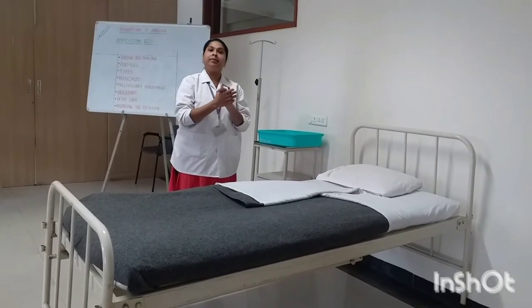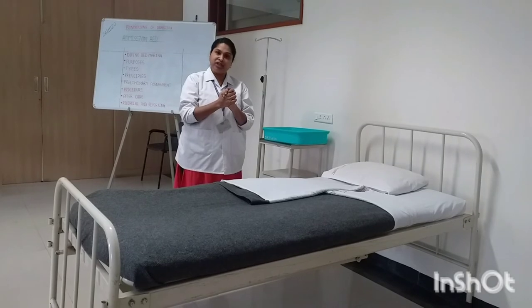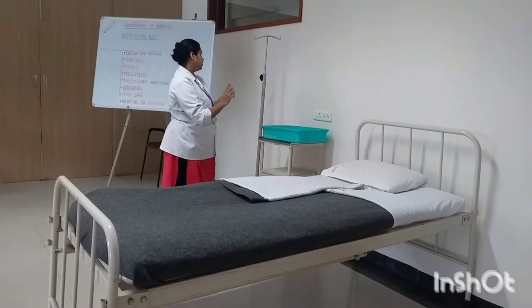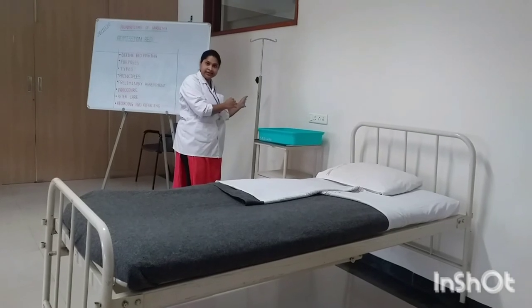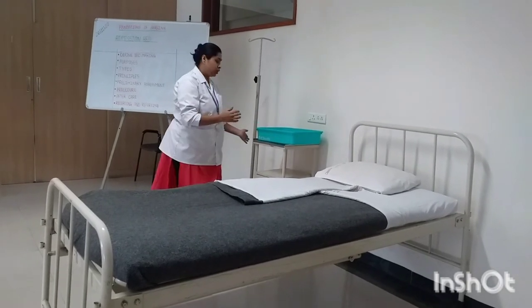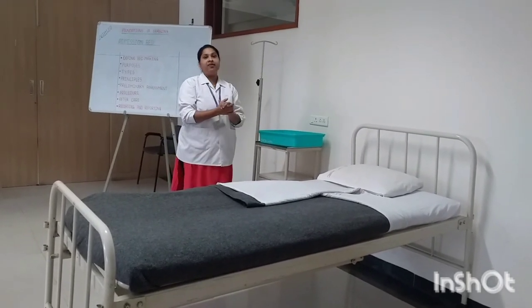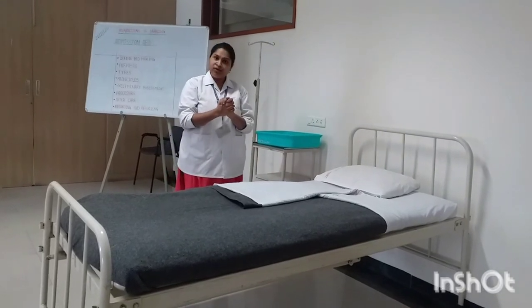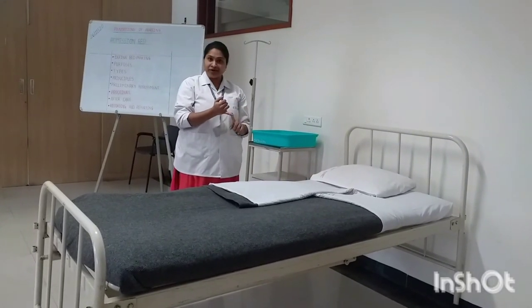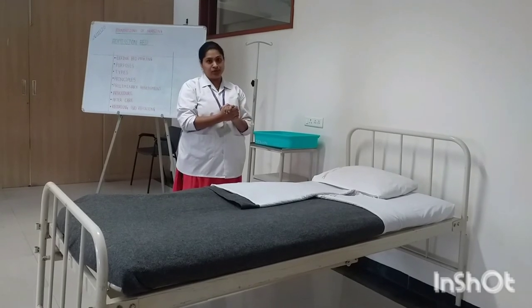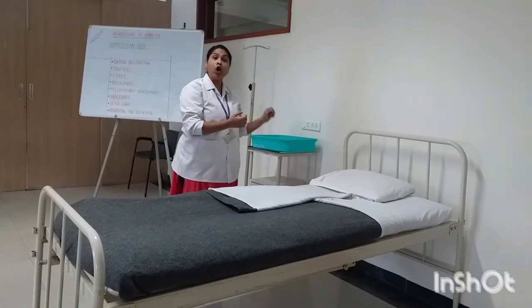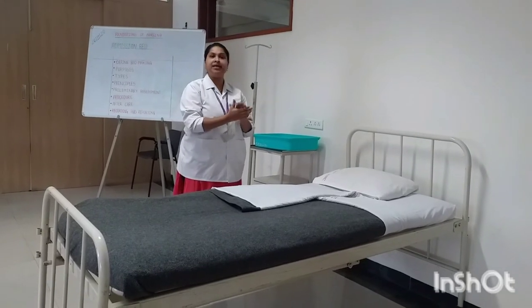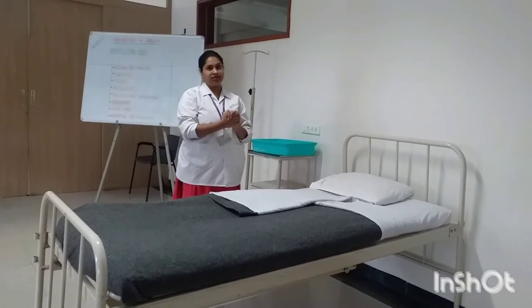This is how we prepare a wrinkle-free admission bed for the patient. When preparing an admission bed, we also provide extra articles: a locker for the patient, a clean uniform, a glass of water, a jug and spoon. We also keep a call bell near the patient so that whenever the patient wants to call, they may press the call bell.